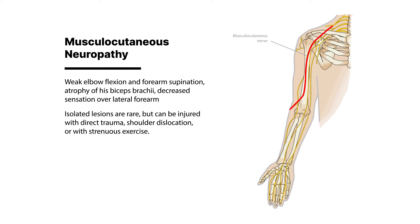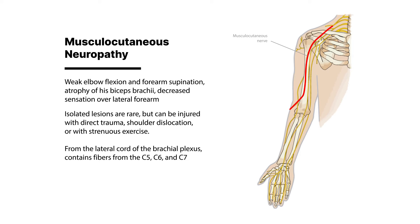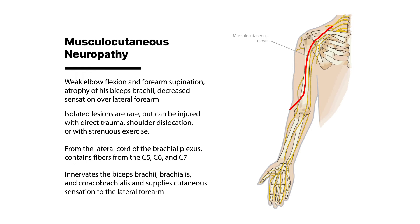Isolated lesions of the musculocutaneous nerve are rare, but the nerve can be injured with direct trauma, shoulder dislocation, or with strenuous exercise. The musculocutaneous nerve arises from the lateral cord of the brachial plexus and contains fibers from the C5, C6, and C7 nerve roots. It has the crucial role of innervating the muscles in the anterior compartment of the arm, like the biceps brachii, brachialis, and coracobrachialis. It's also responsible for sensation over the lateral forearm.